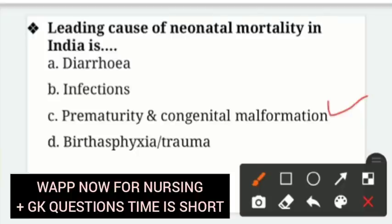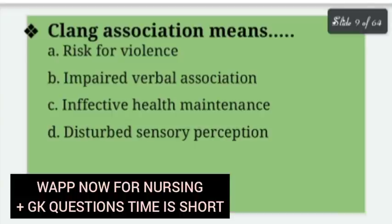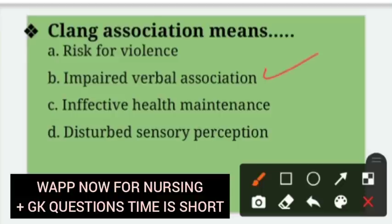Clang association means — clang association ka kya matlab hai? Options: Risk for violence, Impaired verbal association, Ineffective health maintenance, Disturbed sensory perception. In psychiatry, clanging refers to a mode of speech characterized by association of words based upon sound rather than concept. So clang association means impaired verbal association — option B is the right answer.